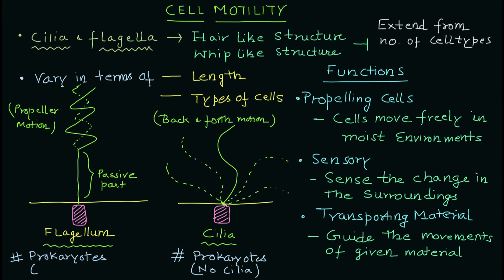We will discuss the prokaryotic flagellum and the detailed structure of cilia and flagellum in eukaryotic cells in the next video. To recap: we started with cell motility and discussed the key structures — cilia and flagella. Their functions include propelling cells, sensing environmental changes, and transporting material. In flagellum, motion is propeller-like; in cilia, it is back-and-forth.